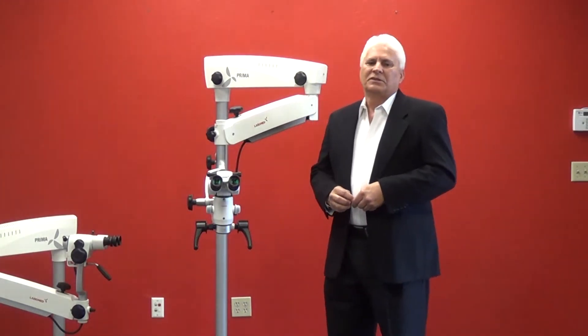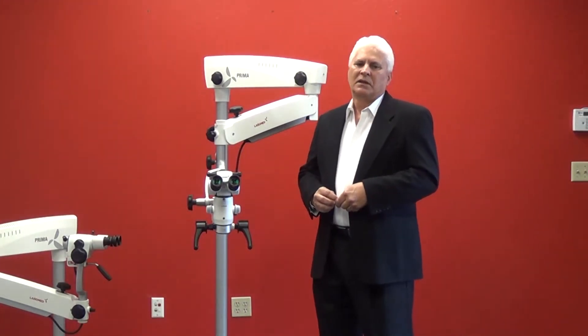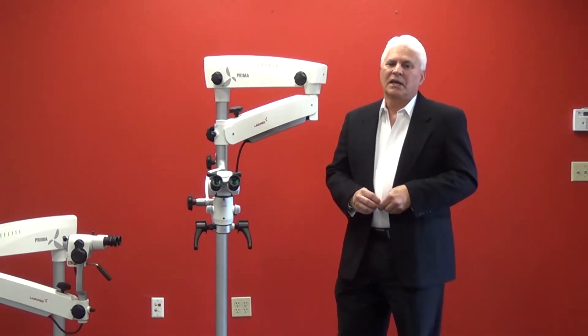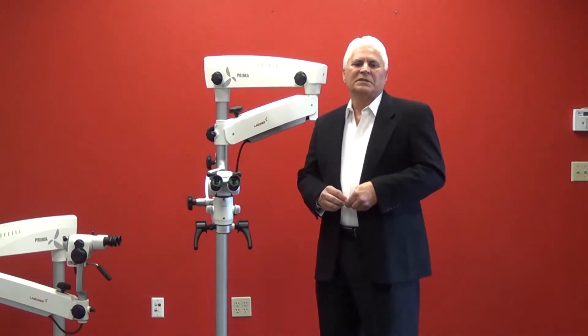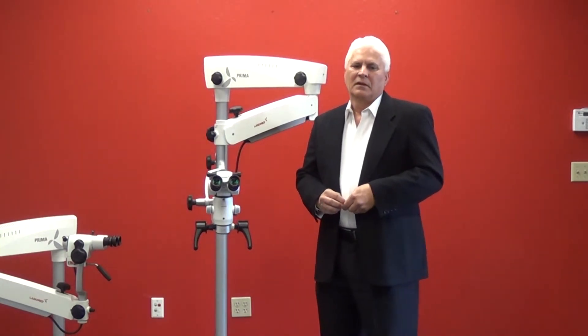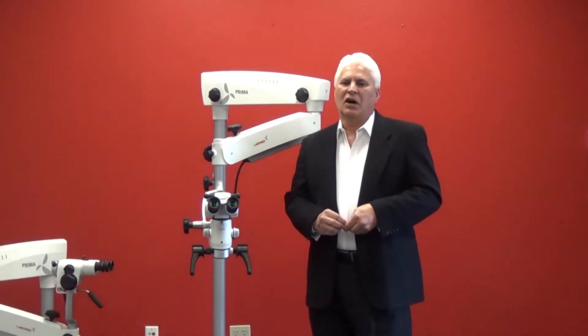The conventional technology, halogen, has a 500 hour lifespan, tends to have a yellow color temperature, and produces roughly 60,000 lux. Lux is a measure of light intensity. This results in an image with a biased color, as well as added cost with bulb replacements and more downtime.